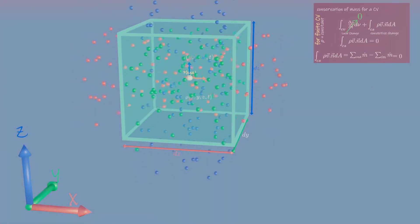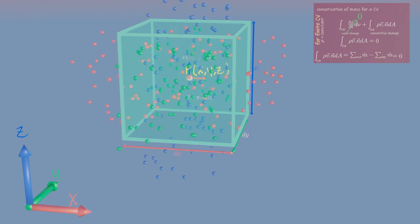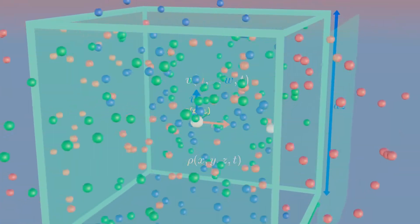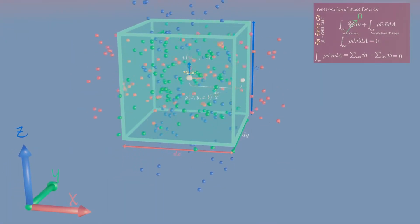At location away from the center of the box, we will use Taylor series expansion about the center of the box, that is from point P. For example, the center of the rightmost face of the box is located at distance dx over 2 from the middle of the box in x direction.